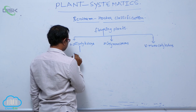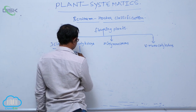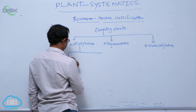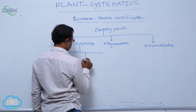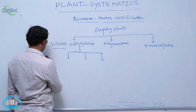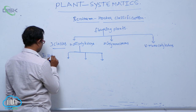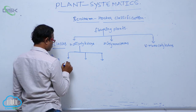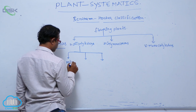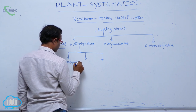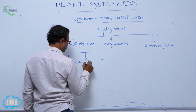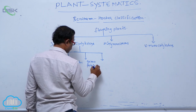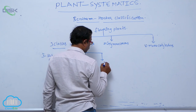Dicotyledons are again divided into three sub-classes: Polypetalae, Gamopetalae, and Monochlamidae.